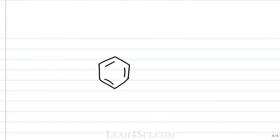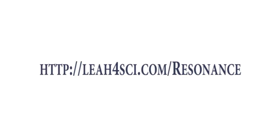Now what happens when you have multiple groups on benzene that can both contribute — for example, NH2, an electron-donating group, and NO2, an electron-withdrawing group? This is just one of the questions you'll find on the resonance practice quiz linked below. Make sure you start with the tutorial series, truly learn what's going on, and then try the quiz to see how you do. You can find all of this on my website leah4sci.com/resonance.